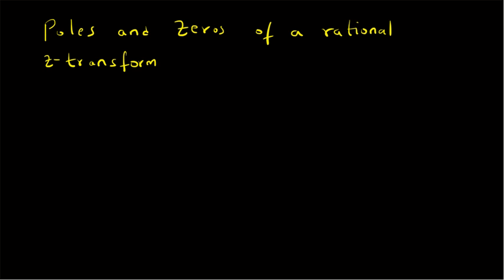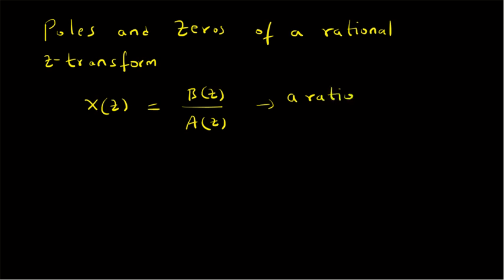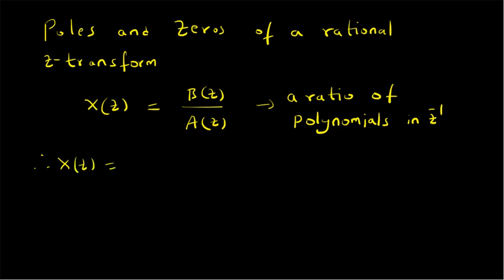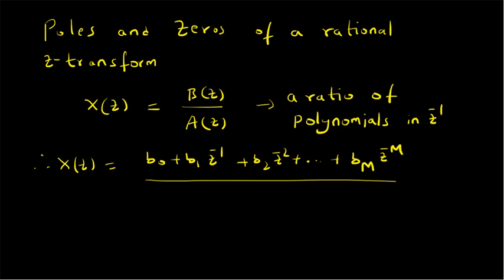First, let us look at what is a rational Z transform. A Z transform X of Z, which is written as a ratio of two polynomials B of Z and A of Z, where both B of Z and A of Z are polynomials. A rational polynomial is basically a ratio of polynomials in Z inverse. X of Z equals B of Z by A of Z, where B of Z can be written as B naught plus B1 Z inverse plus B2 Z power minus 2 and so on up to Bm Z power minus m, and the denominator is A naught plus A1 Z inverse plus A2 Z power minus 2 and so on up to An Z power minus n.